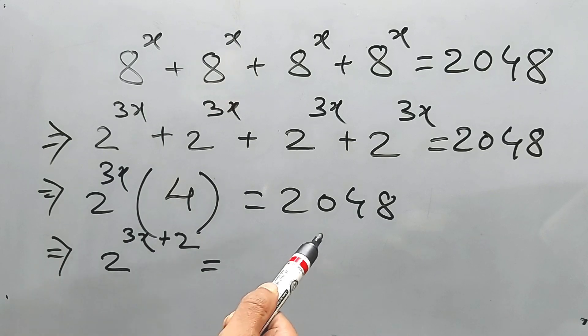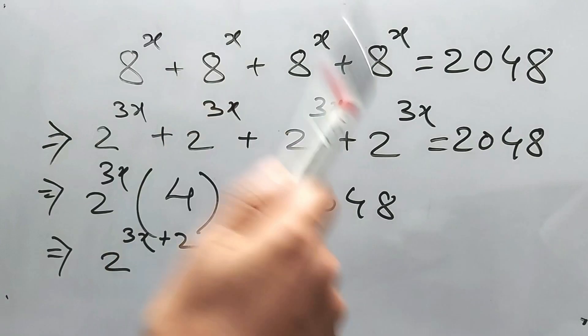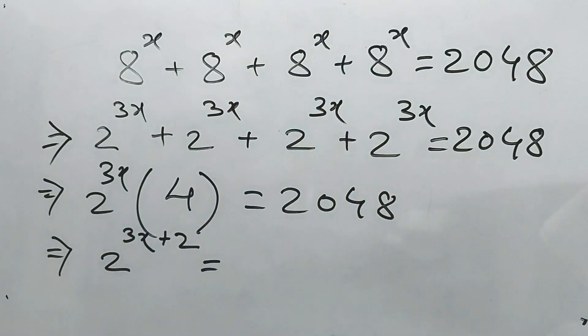Like 2 to the power 4, then 2 cube is 8, then 16, then 32, then 64, then 128, 256, 512, 1024.